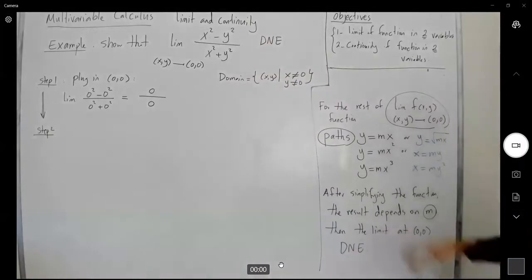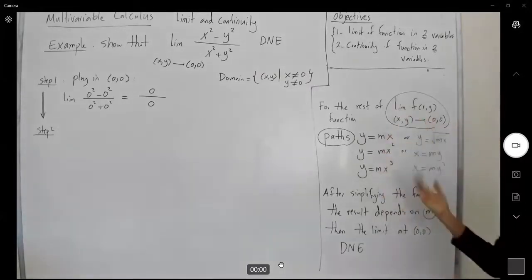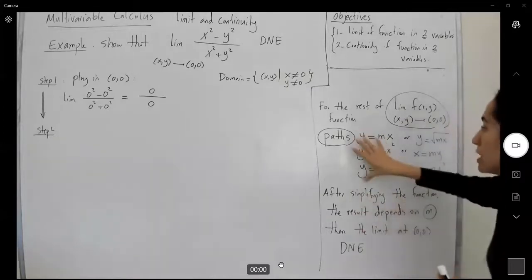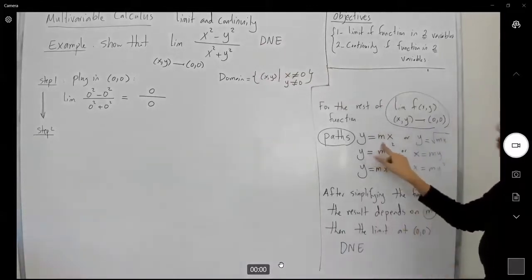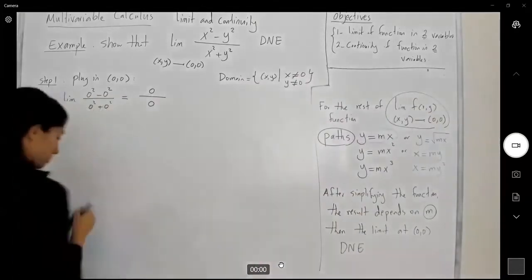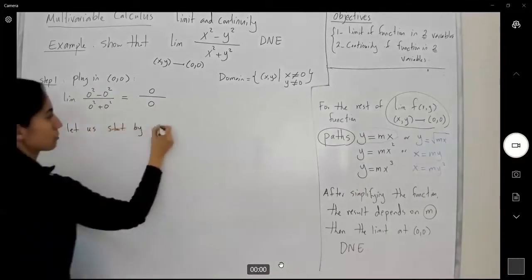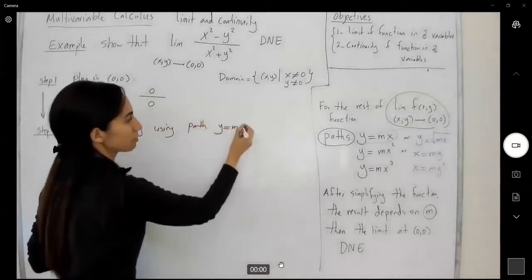What I'm going to do, I'm going to use one of these general paths and simplify my function. And if the outcome depends on m, I'm going to say the limit doesn't exist. So which one is the best choice? Remember that we have many different choices here. We're going to select one of these paths that helps you to simplify this function. I'm going to use y equals mx. I'm going to choose this path. It passes through the origin. Let us start by using path y equals mx. Remember that it passes through the origin.